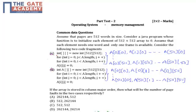Code A: int a[][] = new int[512][512]. For int j = 0, j less than a.length, j++. For int i = 0, i less than a.length, i++. A[i][j] = 0. For this code, the elements will be accessed as: A[0][0], A[1][0], and so on, up to A[511][0], then up to A[511][511].